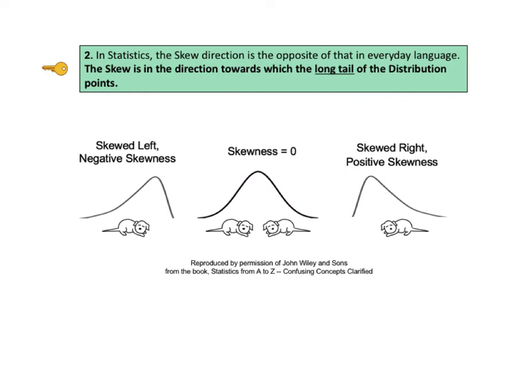KTU number two goes on to say, the skew is in the direction toward which the long tail of the distribution points. Here's a visual memory cue that may be helpful. Look at these images and think the tail wags the dog. It is the tail that defines the direction of the skew, not the bulk of the dog's body. In the distribution on the left, the bulk of the distribution is to the right, as is the bulk of the dog's body. But the long tail of the distribution extends to the left. So the distribution is said to be skewed to the left, and the skewness is negative, less than zero.